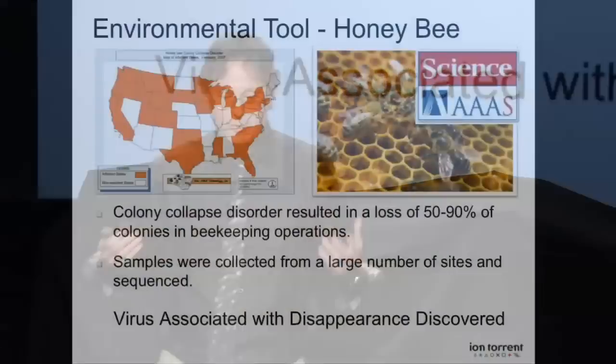This is another experiment you could not have anticipated when all we wanted was to sequence quickly. Honeybees were dying — what's killing the honeybees? Collaborators sent samples to our center, we sequenced them, and they literally found a virus that was in the hives that were dying but not in the hives that were okay. So we've gone from helping people to helping the environment.